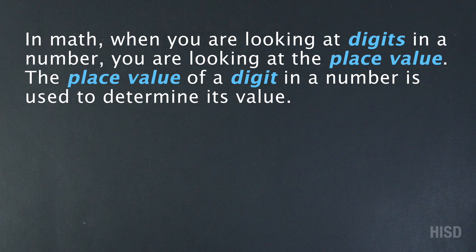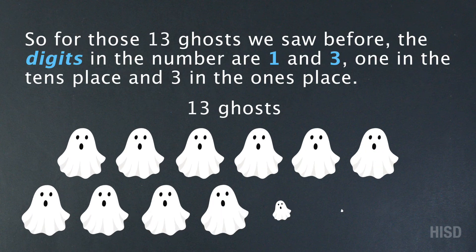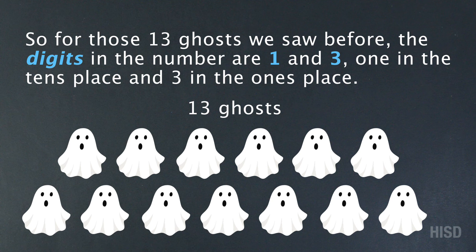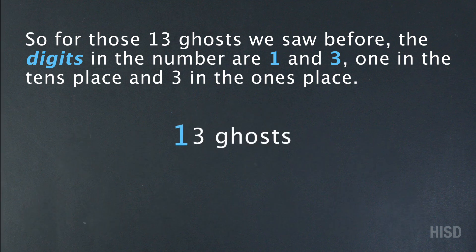In math, when you are looking at the digits in the number, you are looking at the place value. The place value of a digit in a number is used to determine its value. So for those 13 ghosts we saw before, the digits in the number are 1 and 3 — 1 in the tens place, and 3 in the ones place.